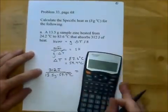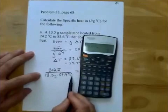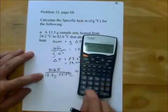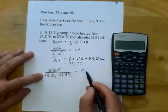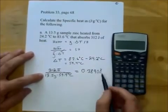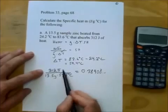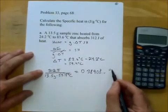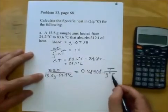We just need to put that in our calculator. We go 312 divided by parentheses — it's very important to put the bottom part in parentheses — 13.5 times 59.4, close parentheses, and I get 0.38908 joules per gram degrees Celsius. Since none of the units canceled, we carry over the units that we had.